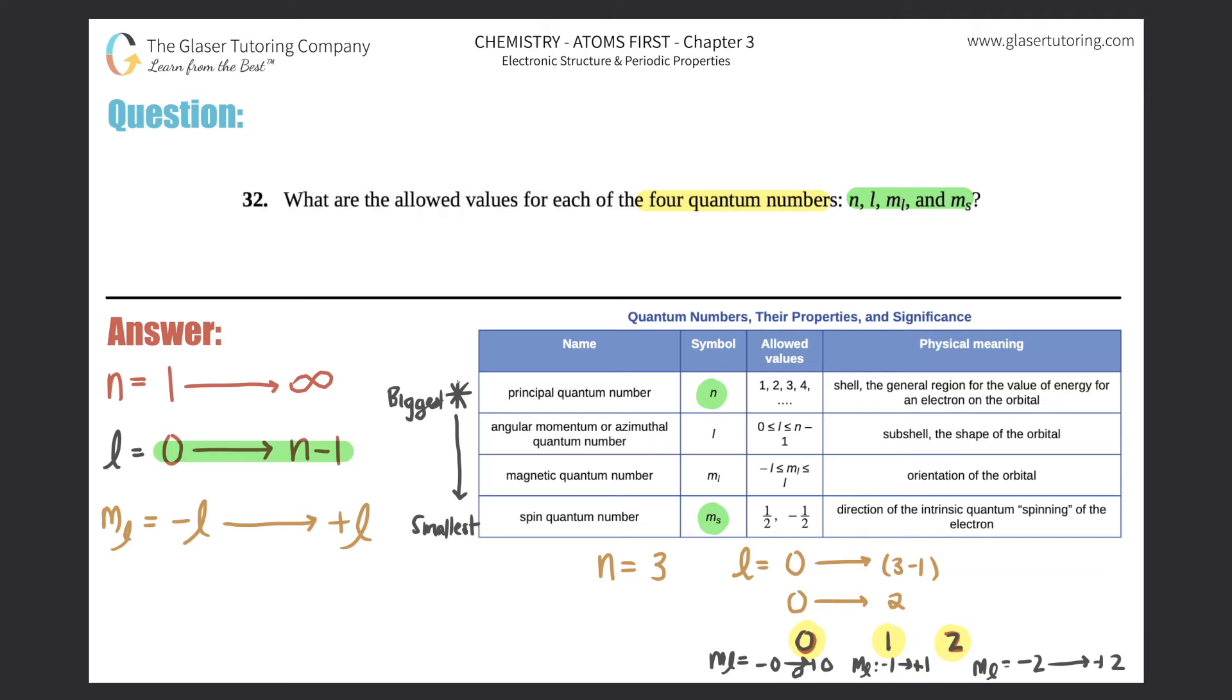Last but not least, you have the ms or the spin quantum number. The spin quantum number talks specifically about how the electron is spinning. It could either spin in a positive direction or a negative direction. Positive is represented by a plus one half, or it could be spinning in the negative direction, minus one half. It would never be any other number than this for a specific electron.